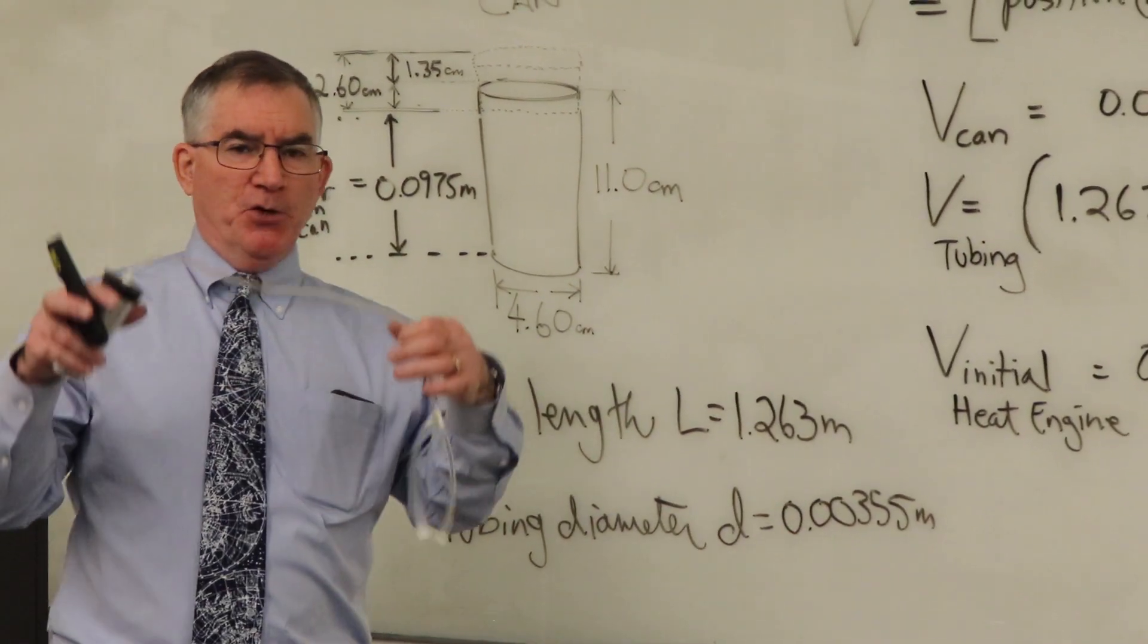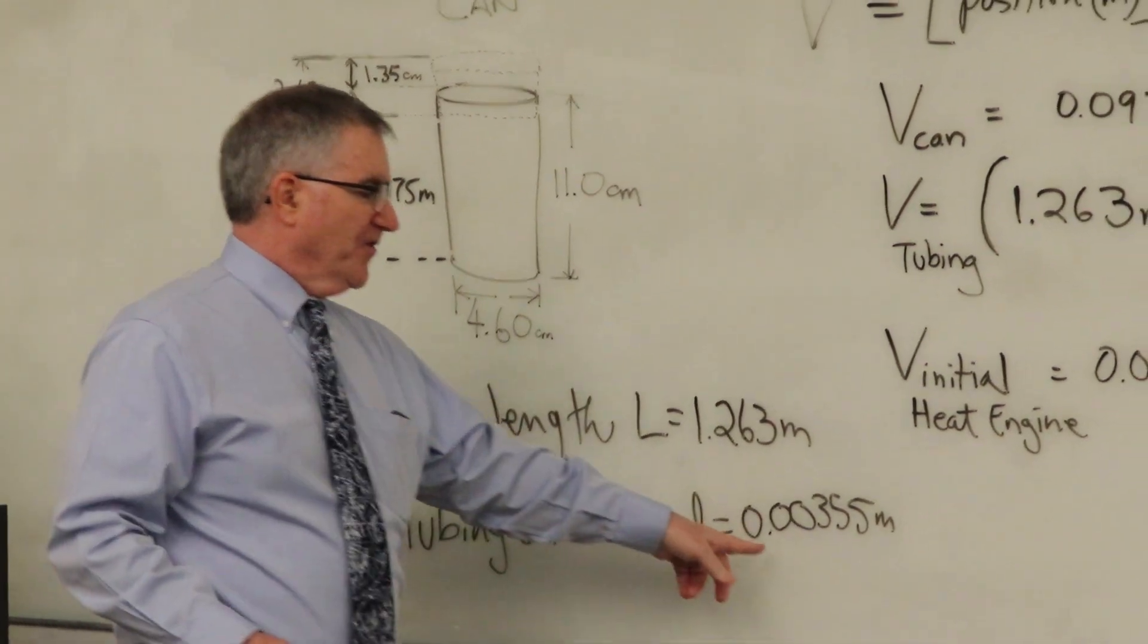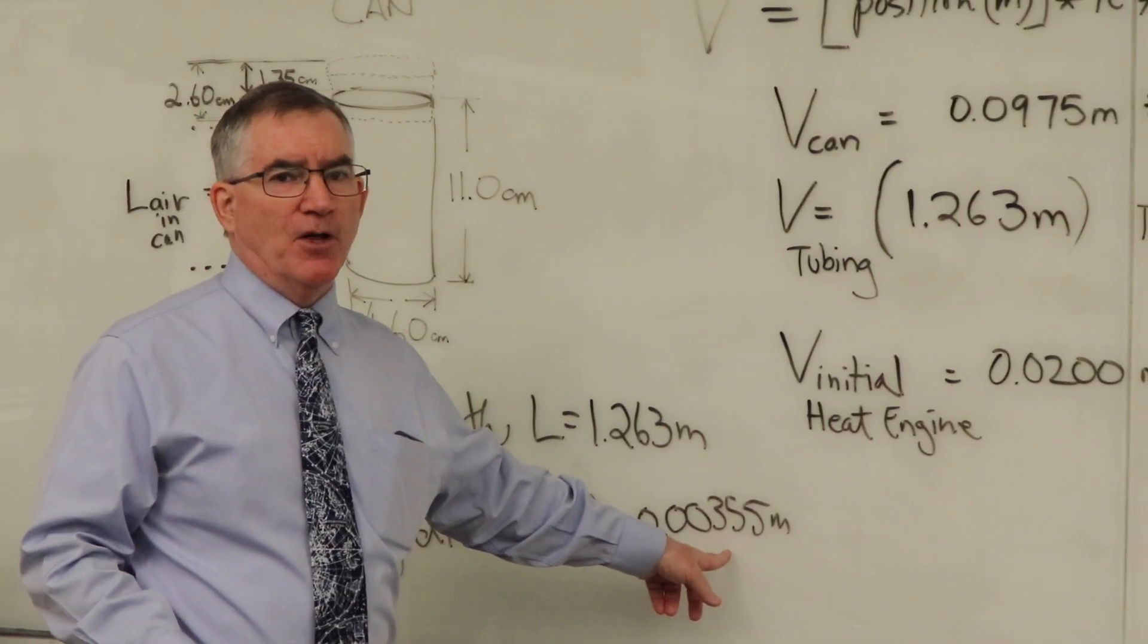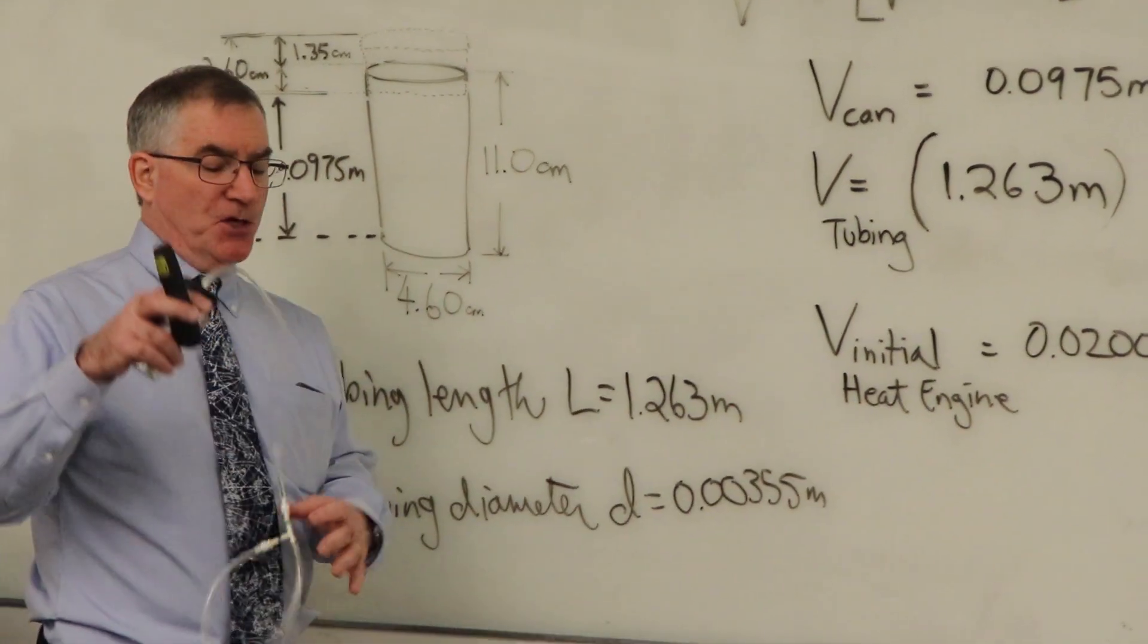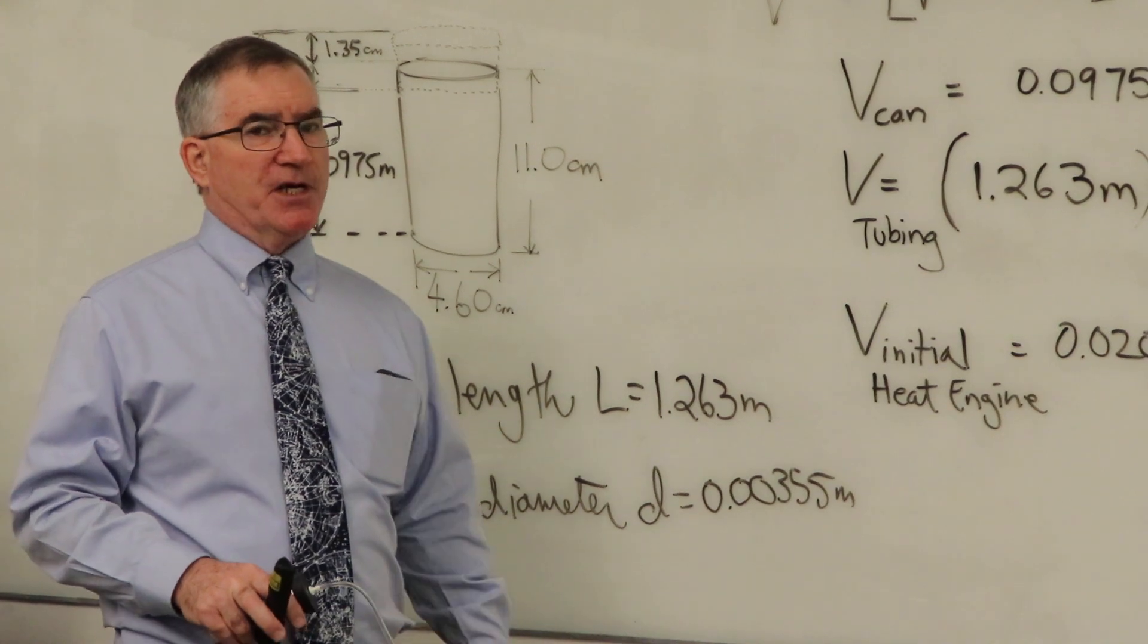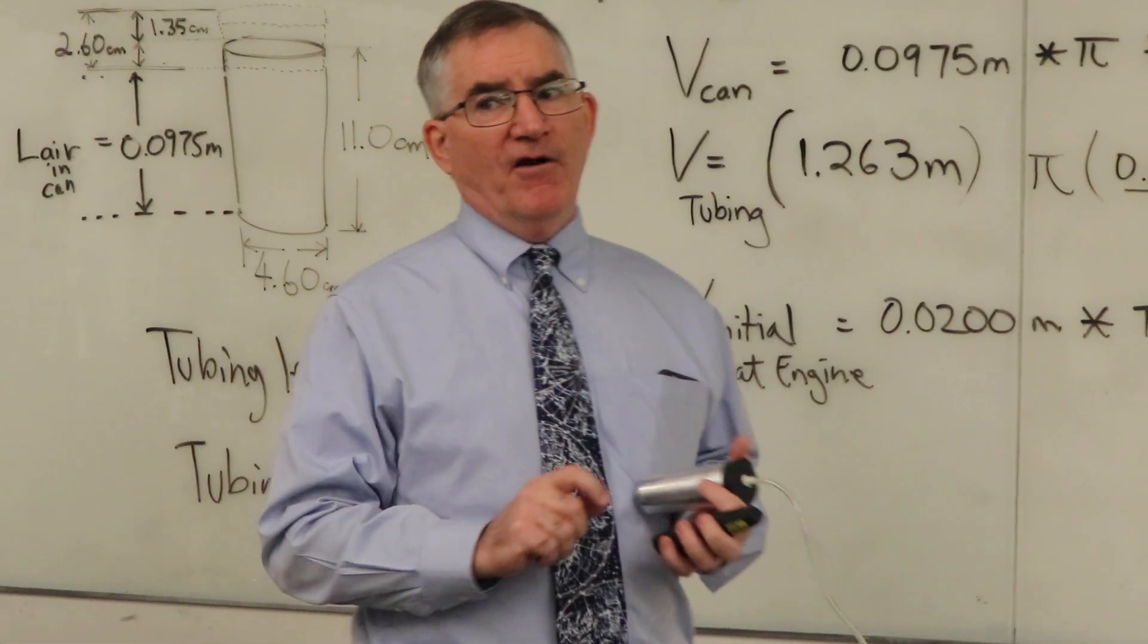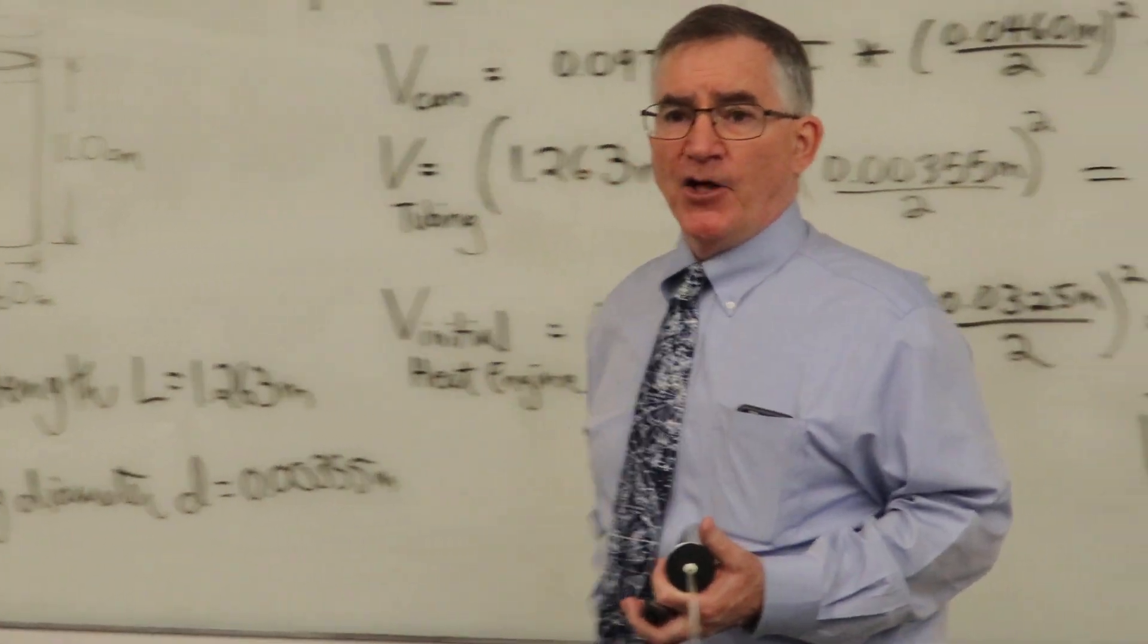Then we have to also measure the tubing volume, and so the tubing diameter is a very small 3.55 millimeters, and the length of the tubing that's being used is 1.263 meters long.